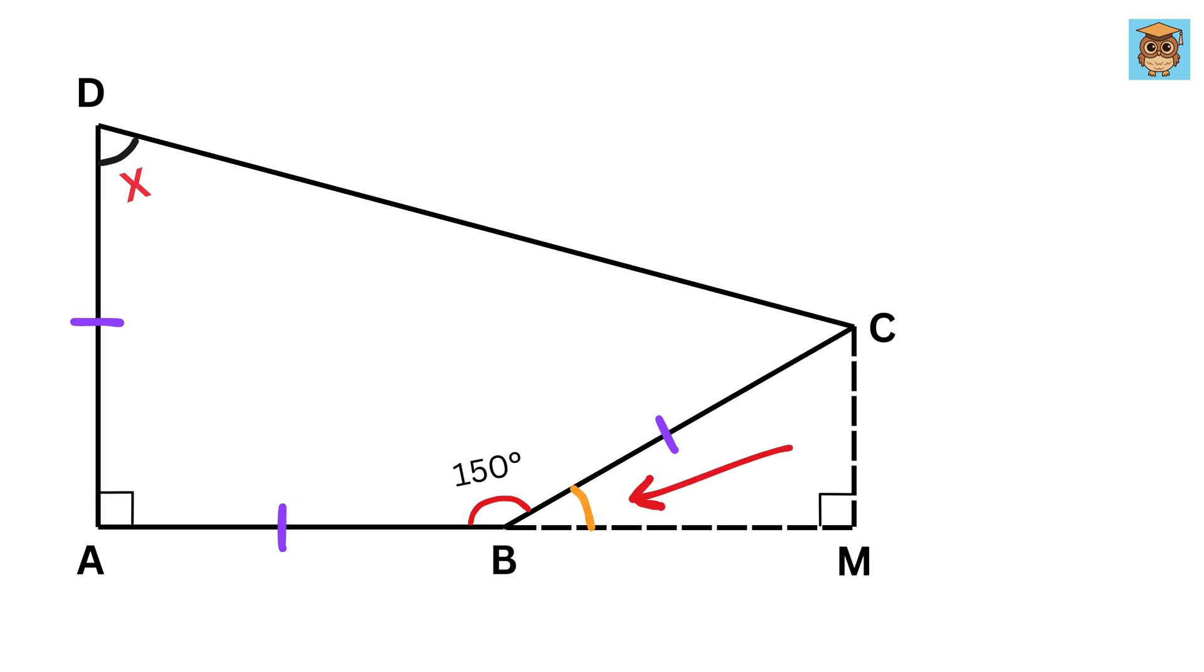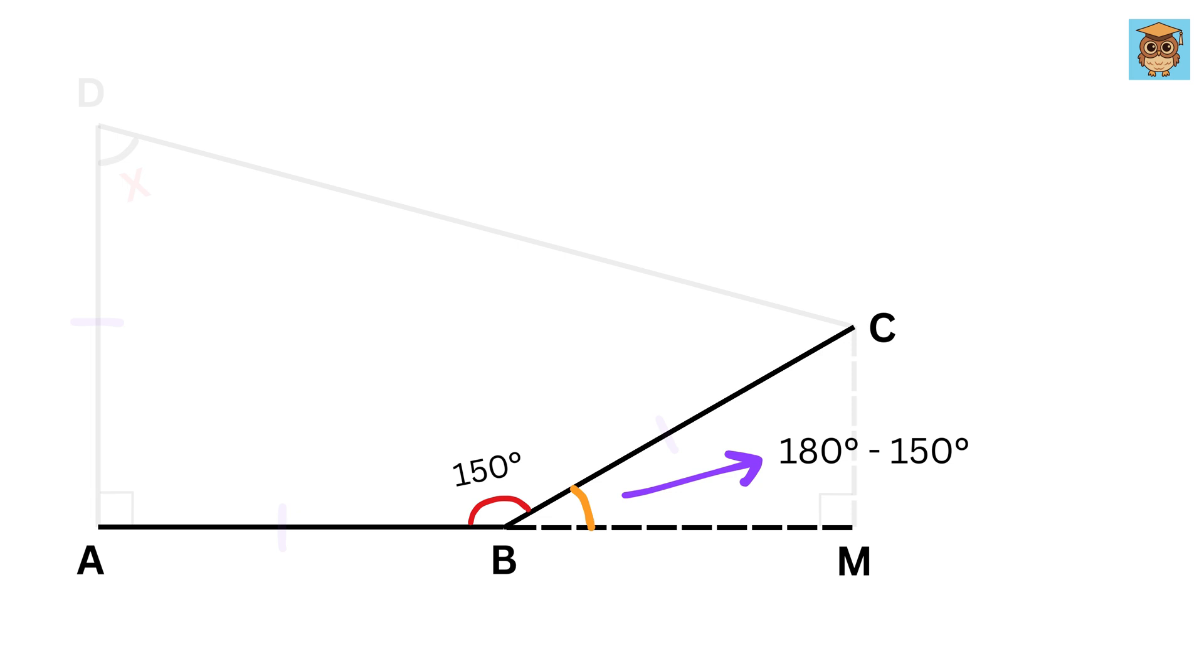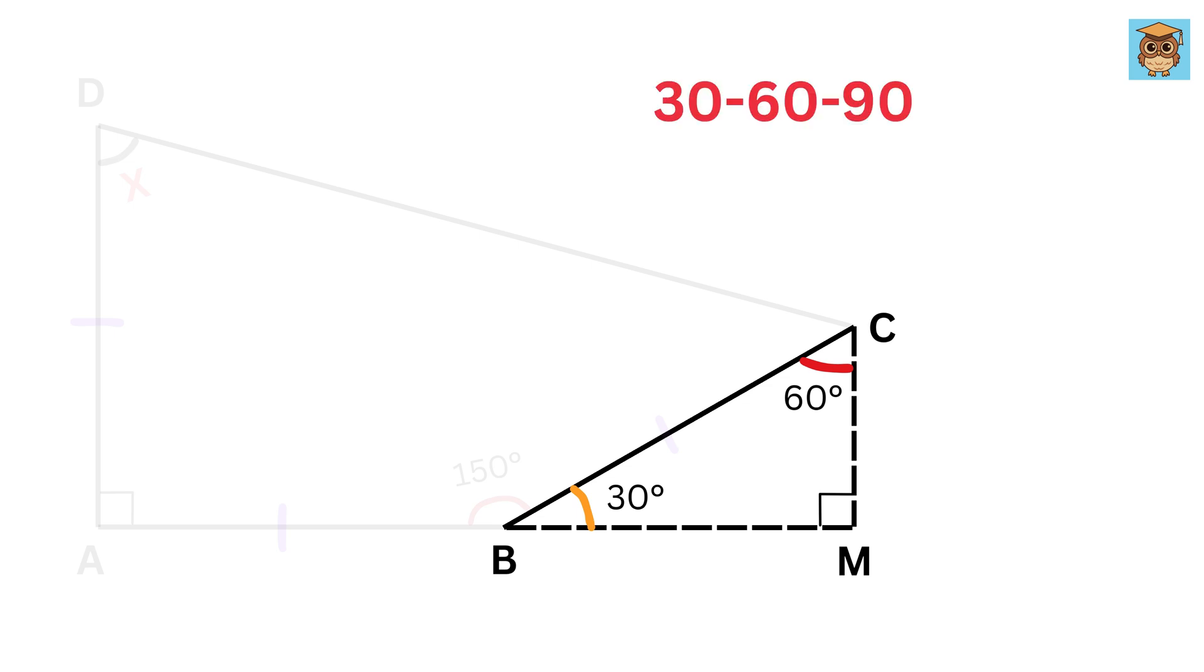Tell me what will be the value of angle CBM. We know that angles on a straight line add to 180 degrees. Angle ABC and angle CBM are angles on a straight line, so their sum is 180 degrees. Angle CBM must be 180 minus 150 or 30 degrees. Now since triangle CMB is a right triangle and angle CBM is 30 degrees, therefore angle BCM must be equal to 60 degrees and hence triangle CMB is a 30-60-90 right triangle.